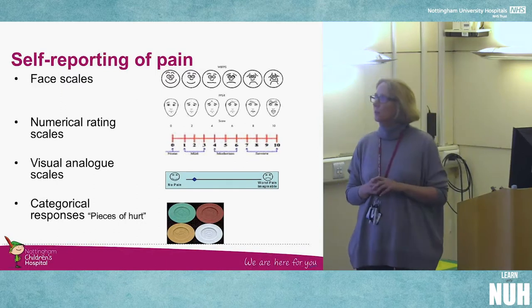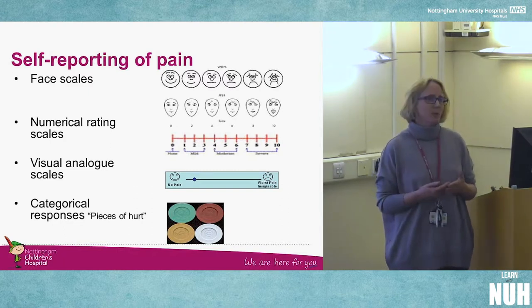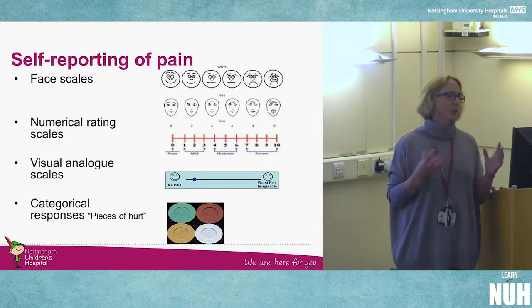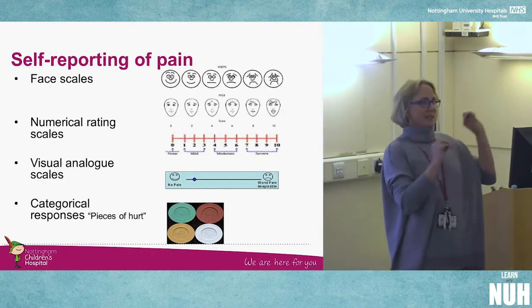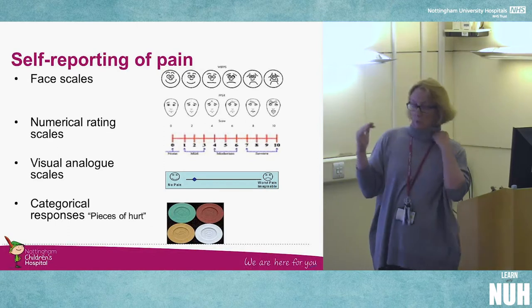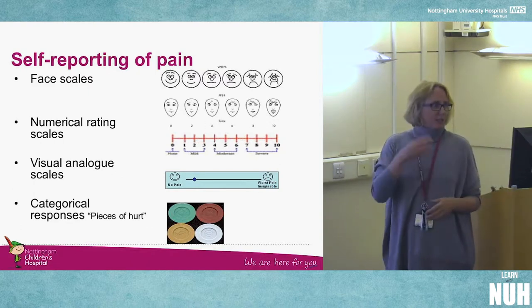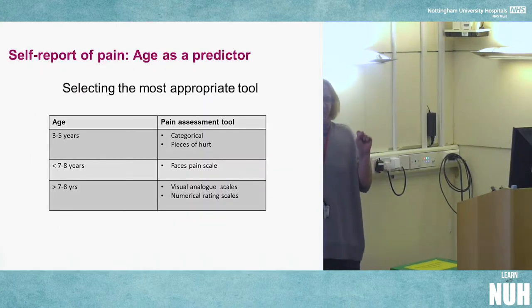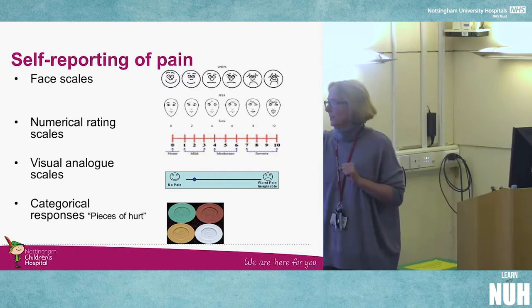For self-reporting tools, the one you should all know is the smiley faces scale — Wong and Baker — first published around 1988. It was revised because the original was felt to measure happiness rather than pain. We now prefer a grimacing scale, going from not grimacing to severe grimacing, because grimacing is a universal expression of pain. There are many versions on the internet — emojis, superheroes, anything you like. We also use numerical rating scales and visual analog scales, which can incorporate smiley faces at both extremes.